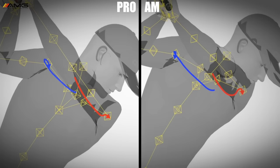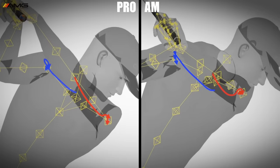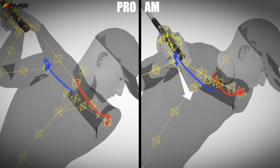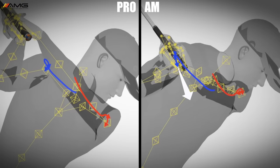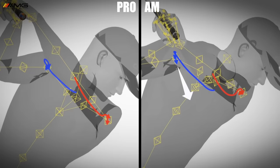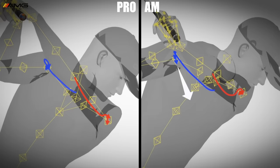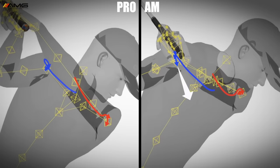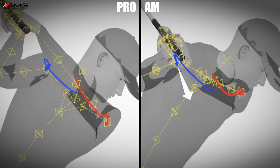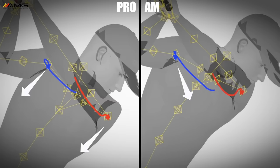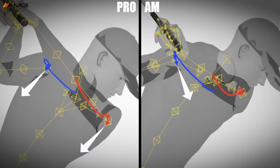As our amateur golfer starts the downswing, we can see his arrow really start to take out towards that ball-target line. This guy actually said one of his downswing thoughts is to start rotating as fast and as hard as he can, and he's actually doing that. This is really good evidence of that thought. If we look at the pro, we can start to see both arrows really start to go down and away from the target line.